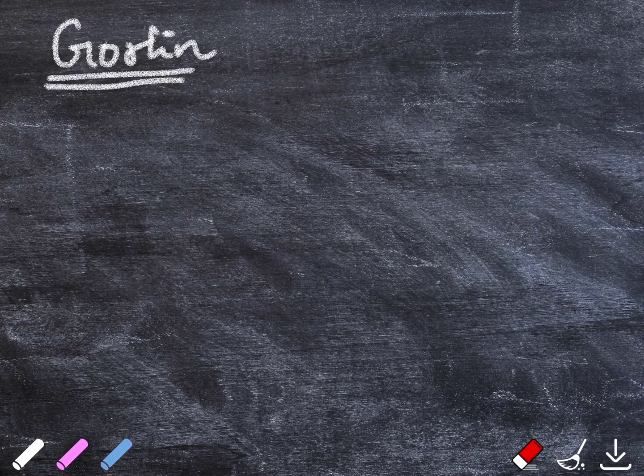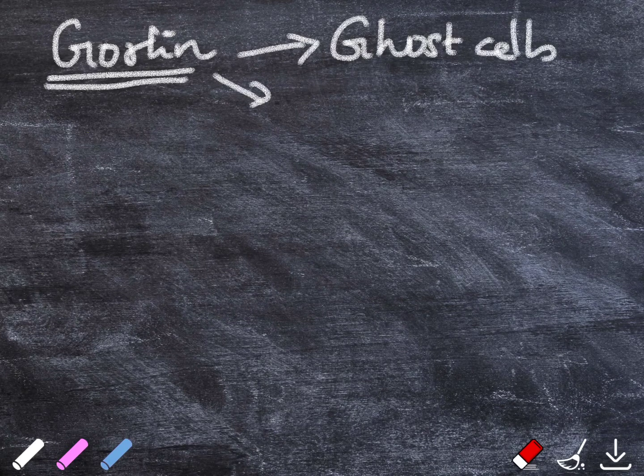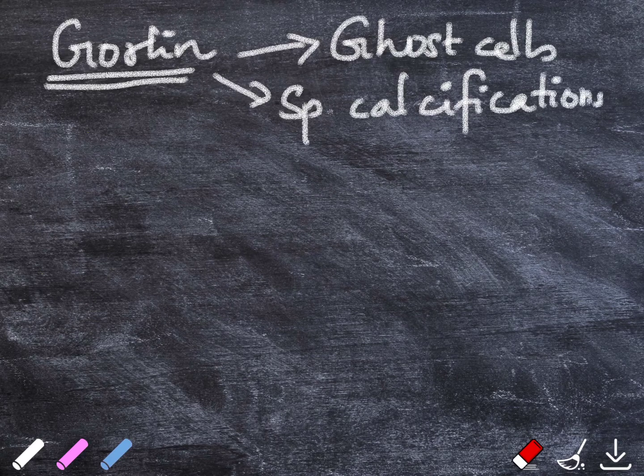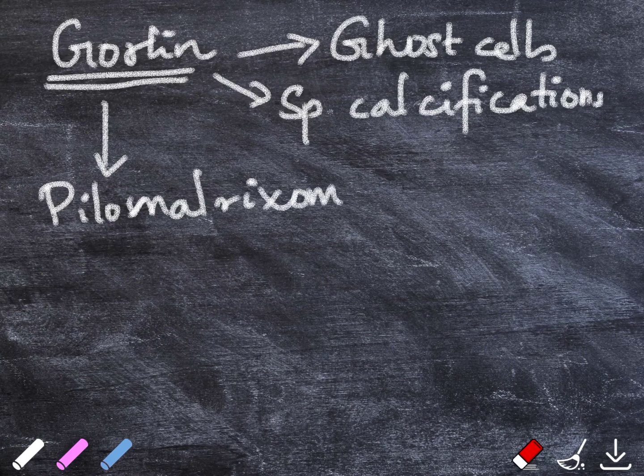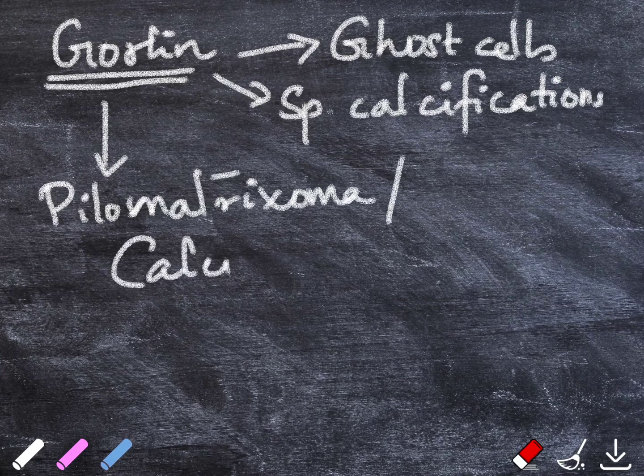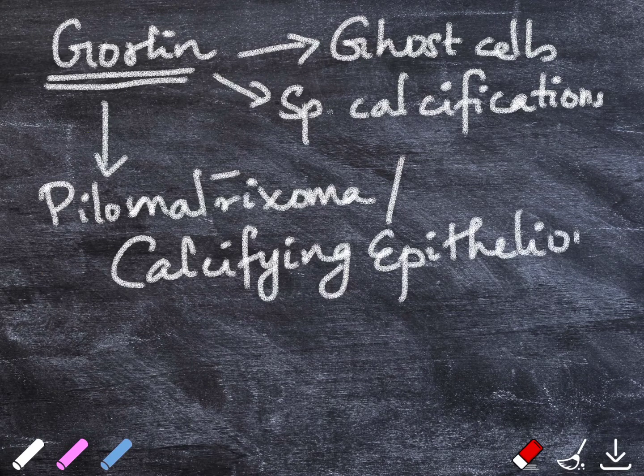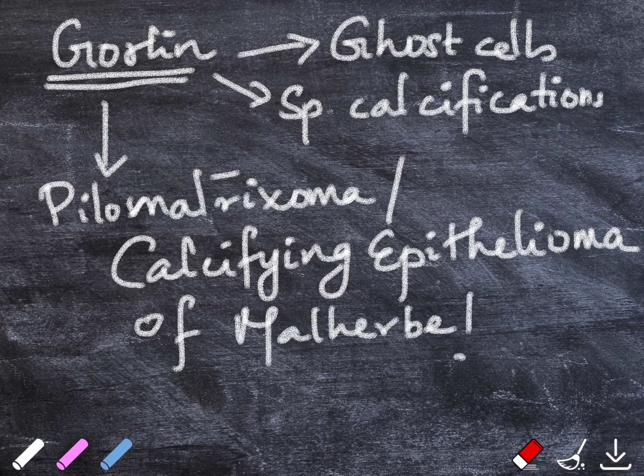Gorlin, when he first described this entity, noticed the presence of ghost cells as well as spherical calcifications. He also appreciated its resemblance to the cutaneous lesion pilomatrixoma, which also had the presence of ghost cells. This entity was also called calcifying epithelioma of Malherbe, hence favoring its naming.